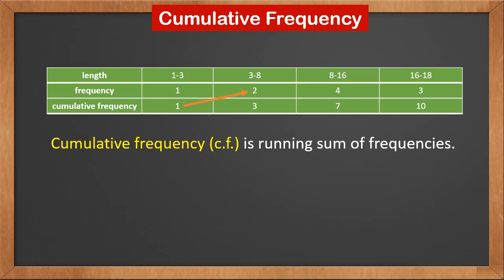Now we add 1 to the second frequency 2 and get 3. We add 3 to 4 and get 7. We add 7 to 3 and get 10. So the cumulative frequencies are 1, 3, 7, and 10.